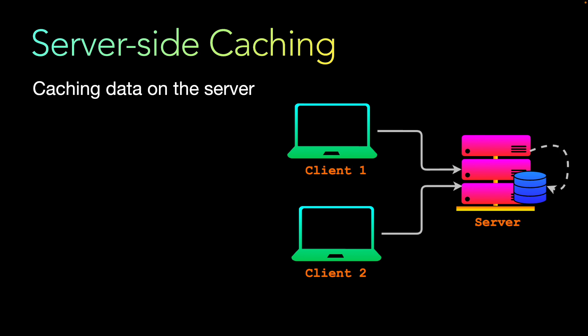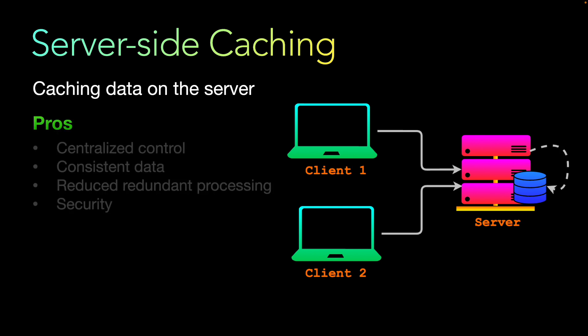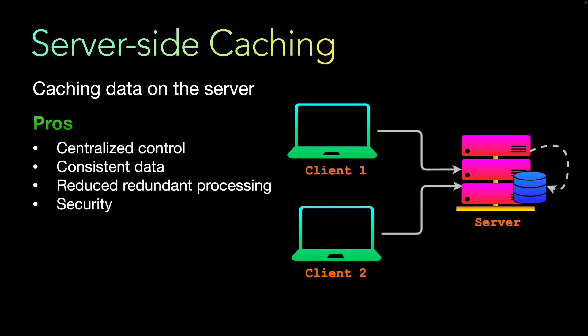If you think of a system design, there are the clients and then there is a server. The server is the back end where the data and the business logic are stored and run, and the client is who is accessing your website or your app. In server-side caching, the data is cached on the server side. So what are the pros and cons of that?